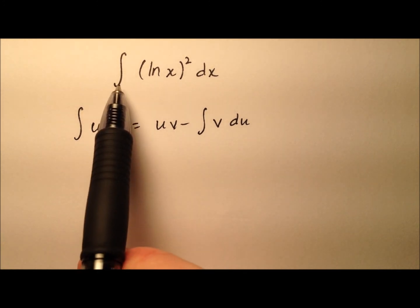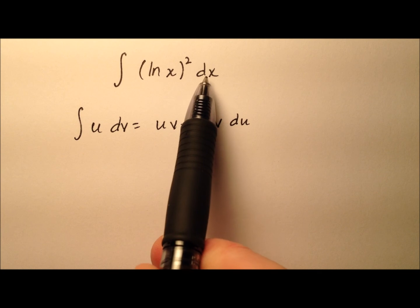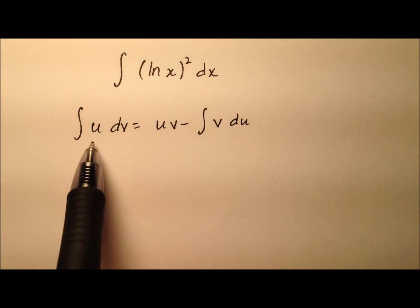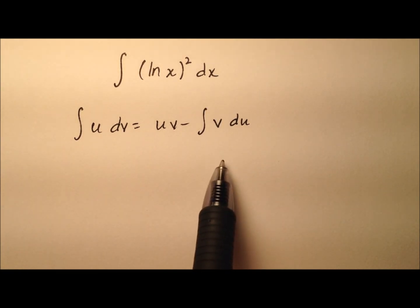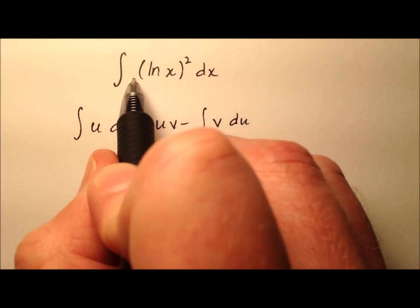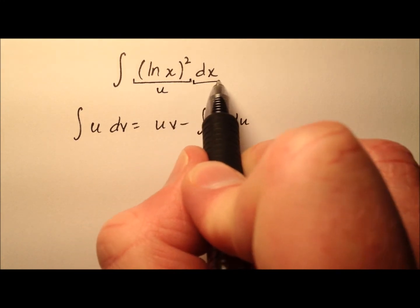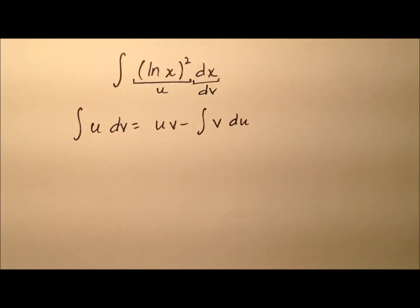In this example, we're going to determine the integral for the square of the natural log with respect to x. We're going to do so by using integration by parts. So I need to choose a u and a dv from this initial integral. The square is going to be my u and then the dv is just going to be this dx.